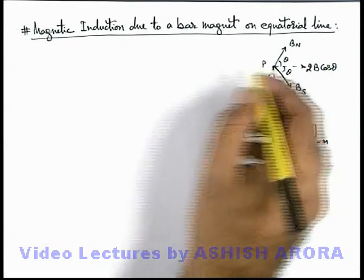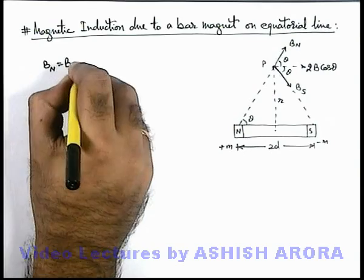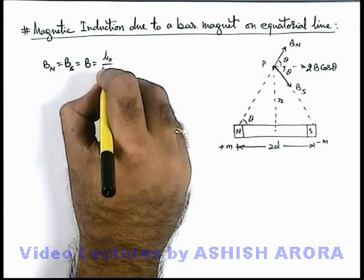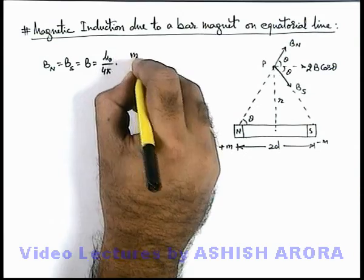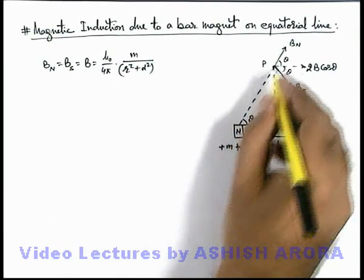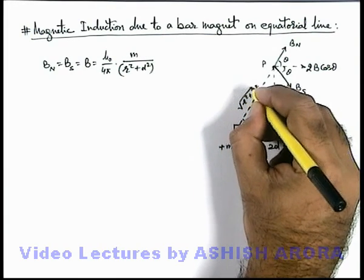Now in this situation the magnitude of B_N or B_S, which we are writing here as B, can be written as μ₀ over 4π, m by r² plus d², that is km by distance squared, and this distance is root of r² plus d².